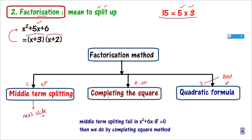When do we use the completing square method? When the middle term splitting method fails. For example, in x² + 6, we cannot do it by middle term splitting — when that fails, we use the completing square method. But students find it too lengthy, so later their favorite becomes the quadratic formula.